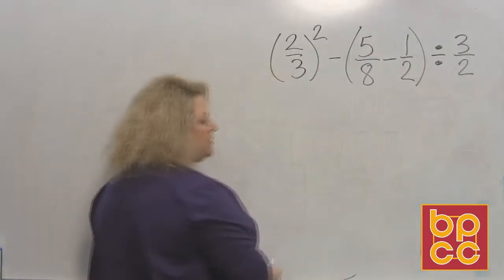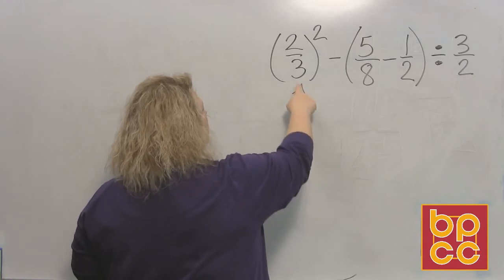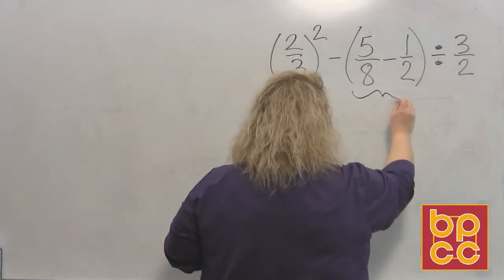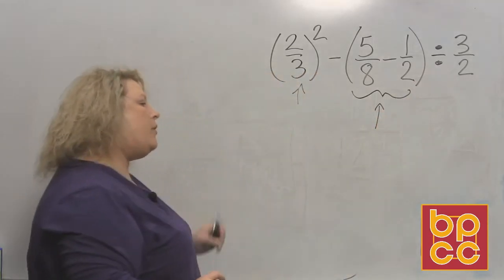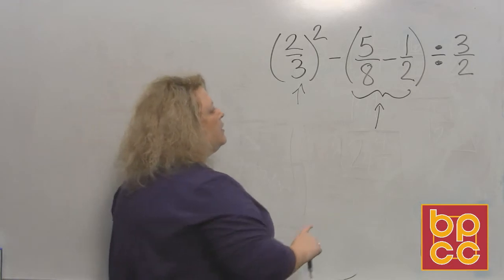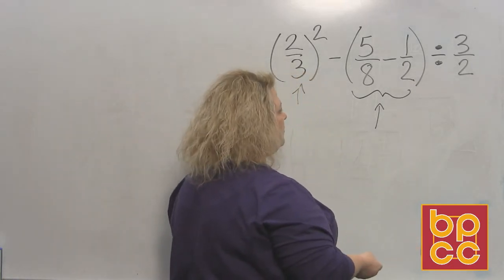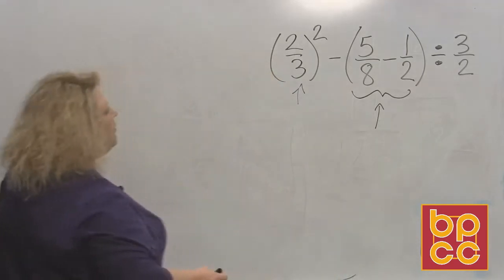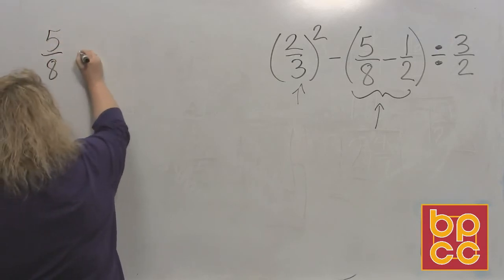Okay, well I see two different sets of parentheses. This set of parentheses has an exponent attached to it, so I'm going to deal with that in just a minute. This set of parentheses right here has subtraction, so I want to go ahead and get rid of those first. So to get rid of them, it's subtracting fractions. So what do you have to do? Find a common denominator and change your fractions. So I'm going to come over here and work that part out.